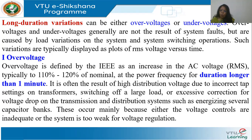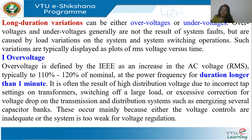When there is a fault, it gets quickly cleared. But an over voltage or under voltage lasts for more than a minute, so it is not because of a fault. It is mostly because of improper loading conditions and switching configurations. To identify over voltage or under voltage, we talk of RMS values.